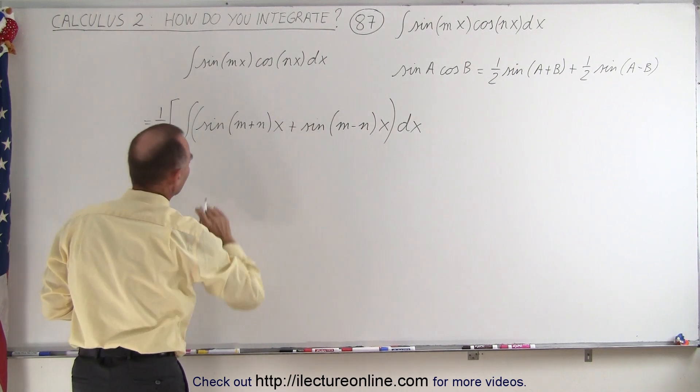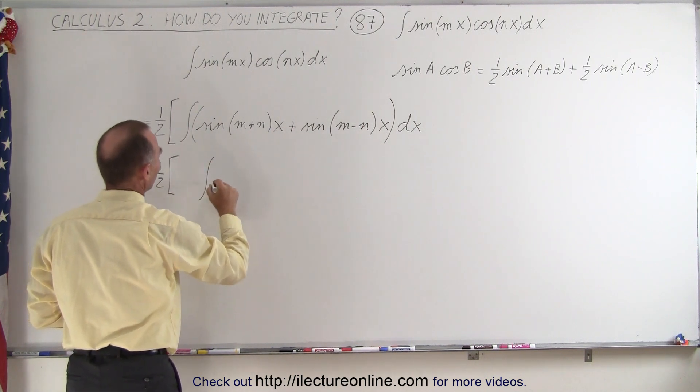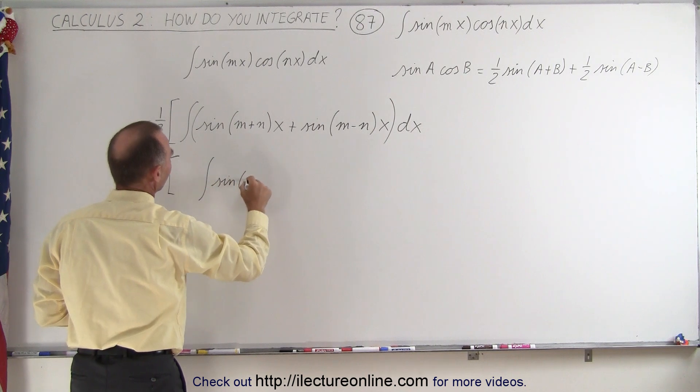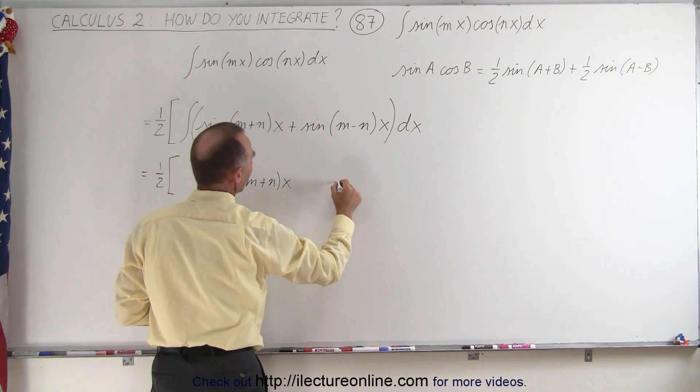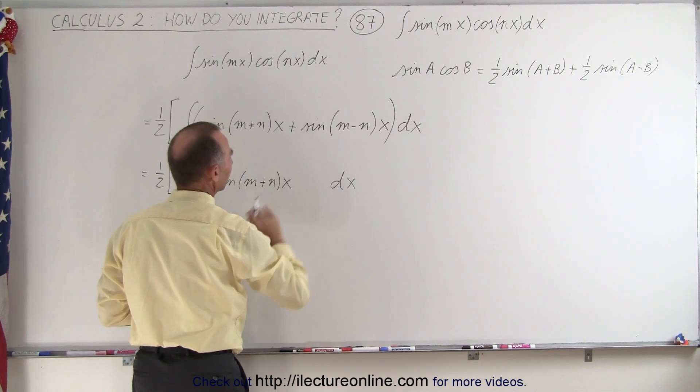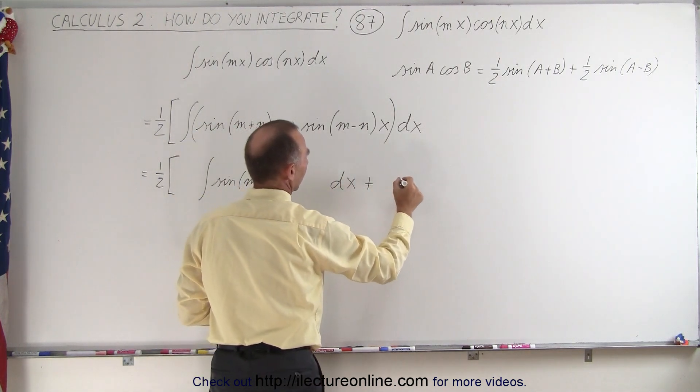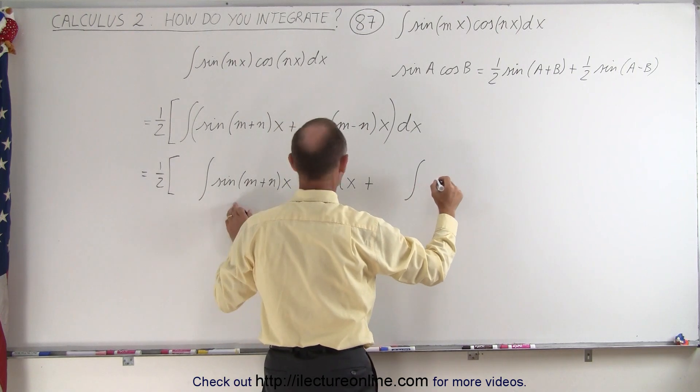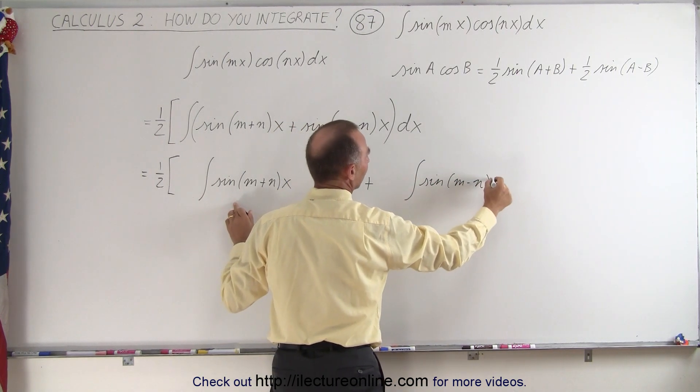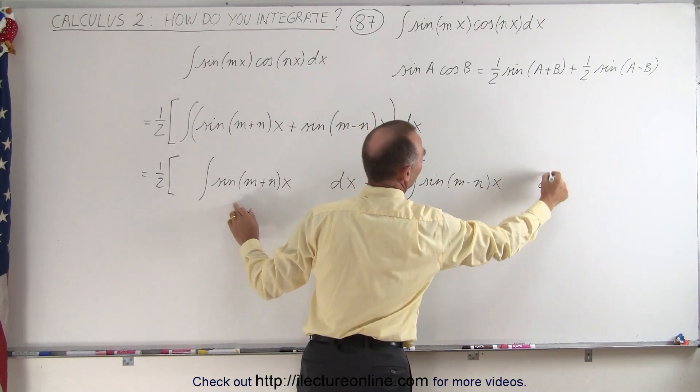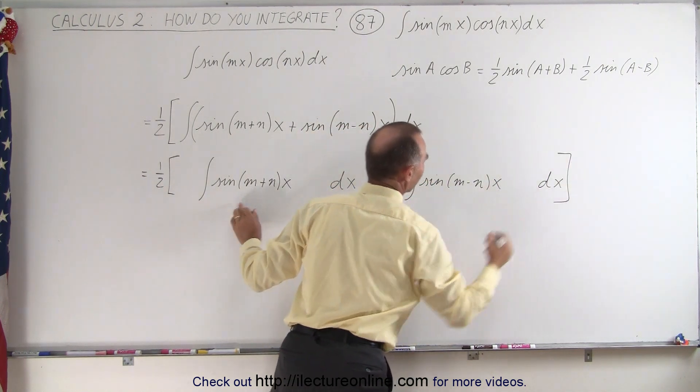and we're going to split it up into two separate integrals. The first one is going to be the sine of m plus nx times dx, and notice I left a little space in here, plus, and again leave some space, the integral of the sine of m minus nx, leave some room, times dx.